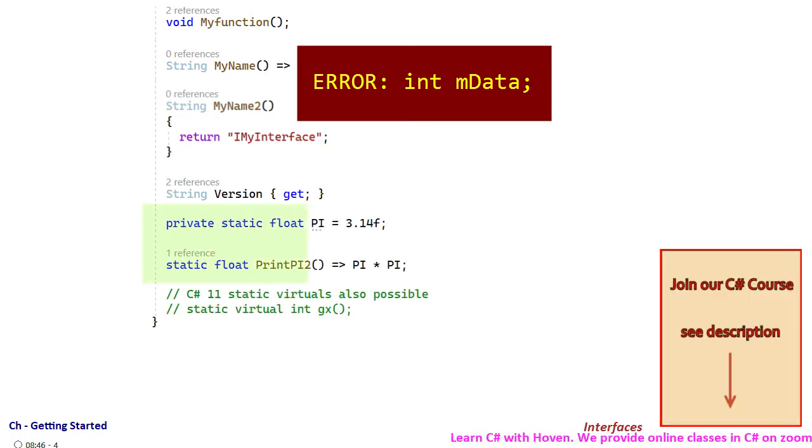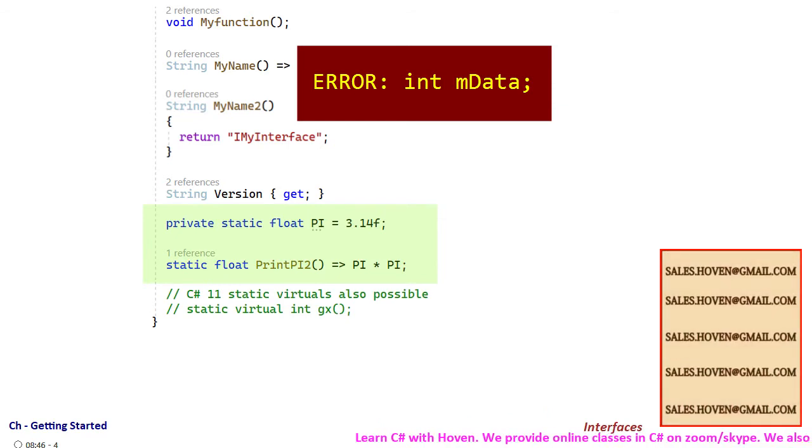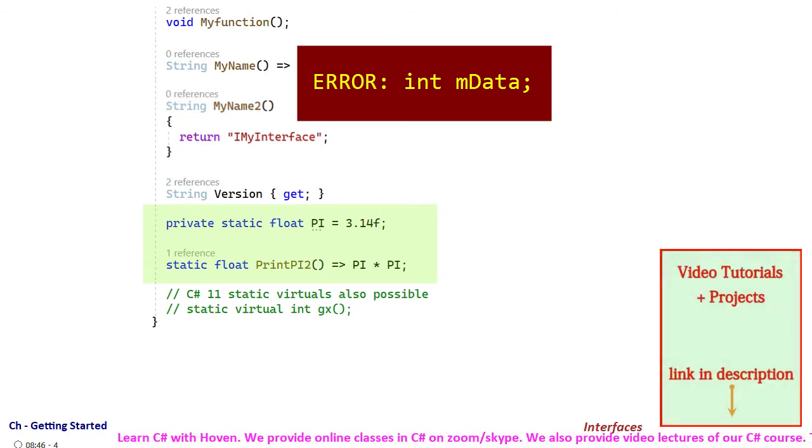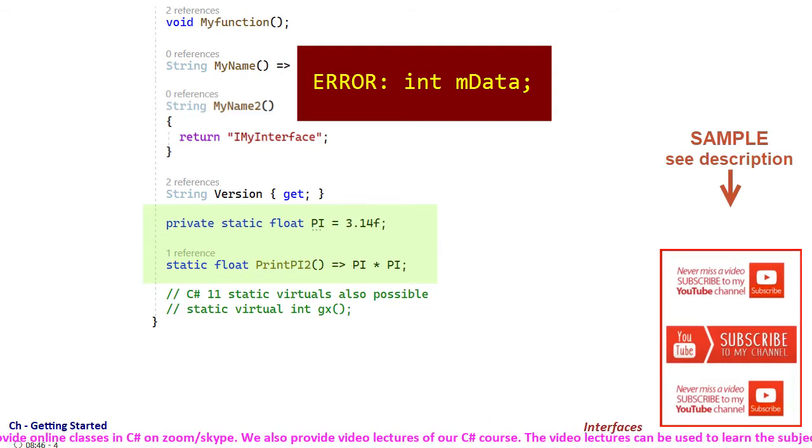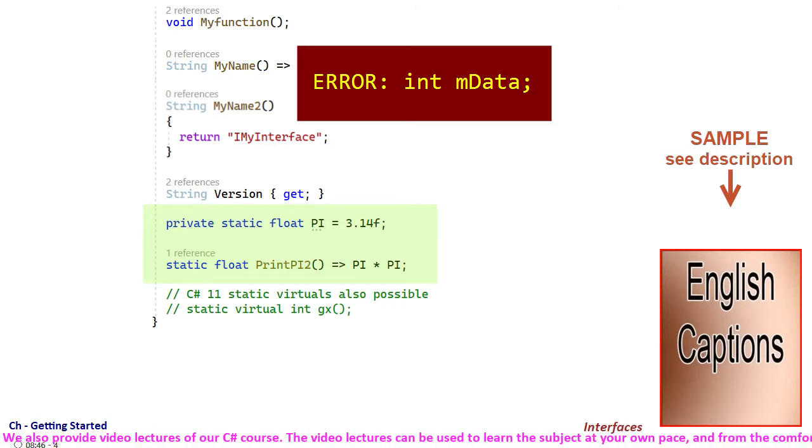An interface can contain static data members and static functions and therefore static constructors as well. It's not that strange as it might appear because static members are tied to the name of the interface and not to the objects of the implementing classes.